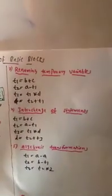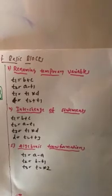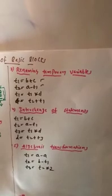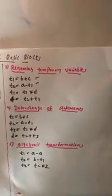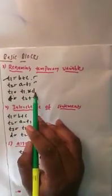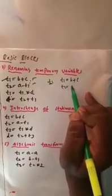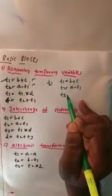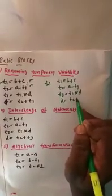The third approach is renaming temporary variables. We have four instructions: T1 equal to B plus C, T2 equal to A minus T1, T1 equal to T1 into D, and T2 equal to T2 plus T1. Here the same variable T1 contains multiple values. We rename the third instruction's T1 to T3, giving: T1 equal to B plus C, T2 equal to A minus T1, T3 equal to T1 into D, and D equal to T2 plus T1. This is the optimized block.